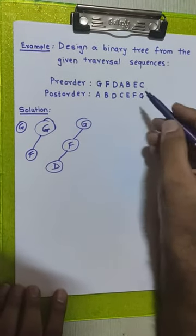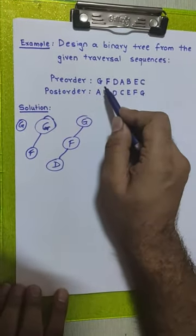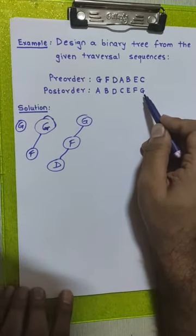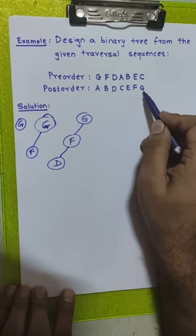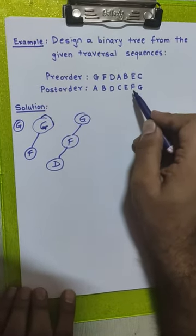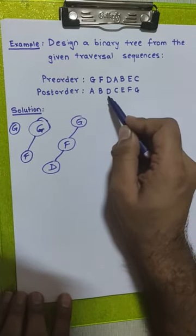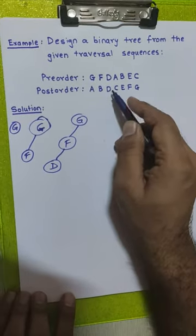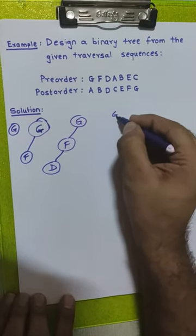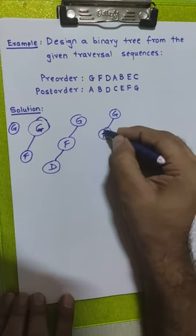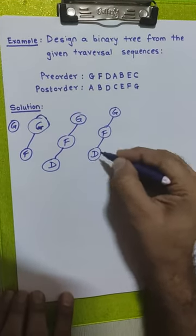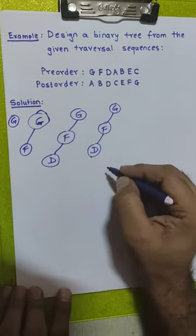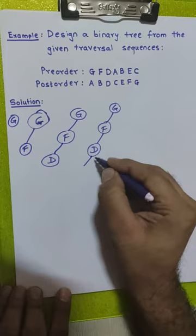Now we take the next element from the pre-order sequence: node A. We check it in the post-order sequence — it appears before G, before F, and also before node D, meaning it is part of node D's subtree and must be placed below node D. Since both children of node D are absent, we place node A to the left-hand side of node D.